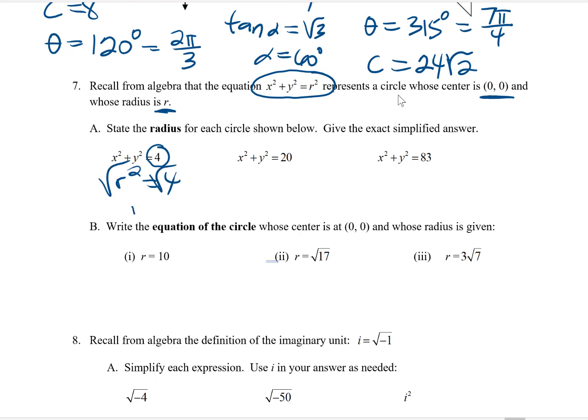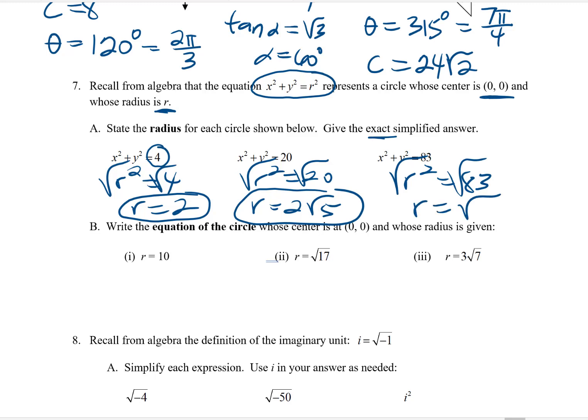To get the radius, you would just have to take the square root. Here, the radius would be 2. Now, the r² is 20. The radius would be the square root of 20, which simplifies to 2√5. We are giving exact answers here. And here, the r² is 83, and so the radius is just √83.